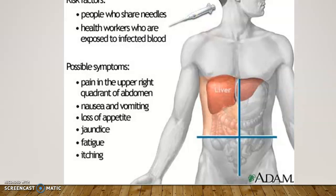One of the many purposes of the liver is to metabolize bilirubin. Bilirubin is a byproduct of red blood cells being broken down — it's a pigment that needs to be metabolized, and if it's not metabolized by the liver, it gets elevated in the blood. This tells the medical professional that the liver is not working properly, and the patient can have other symptoms like nausea and vomiting.